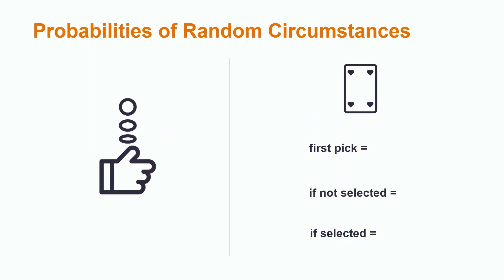All random circumstances have probabilities associated with them. Sometimes, the probabilities for the outcomes of random circumstances are dependent on other potential outcomes, and sometimes they are not.